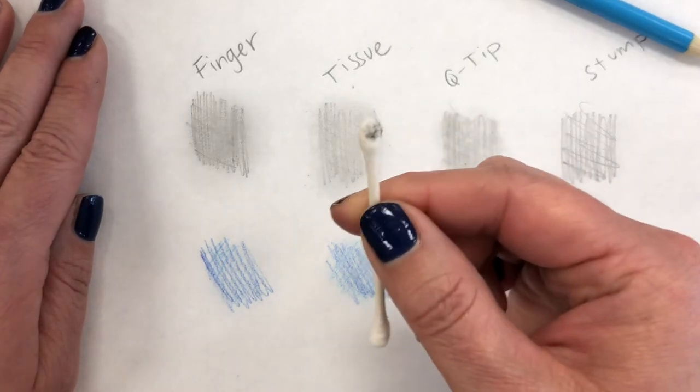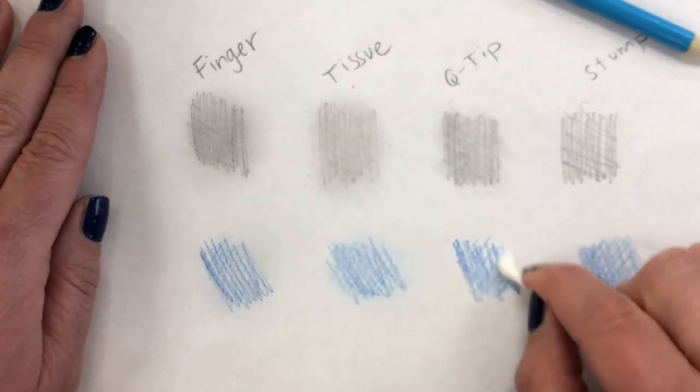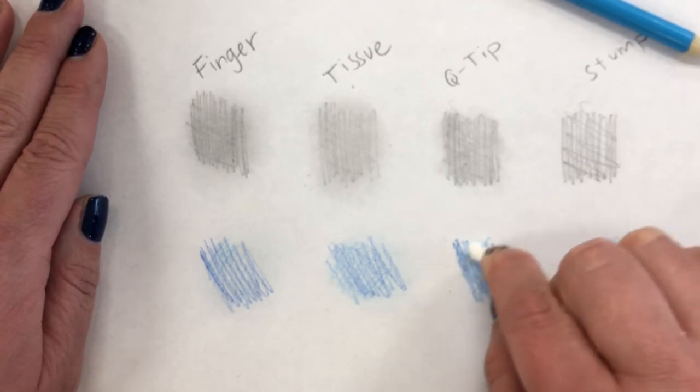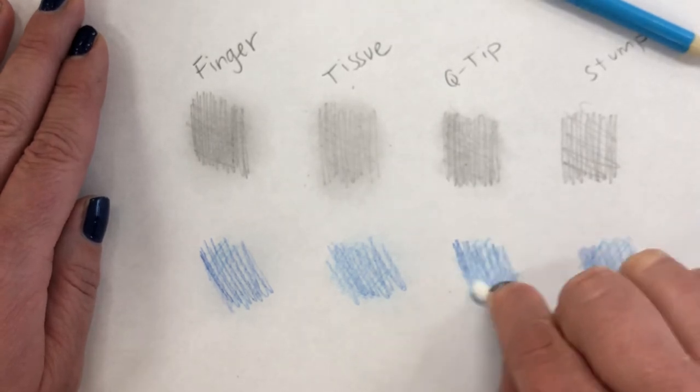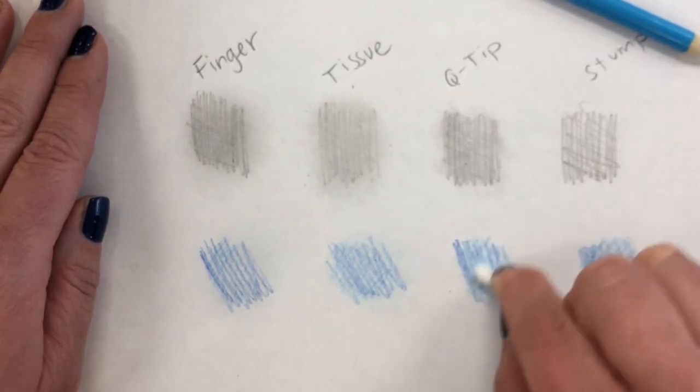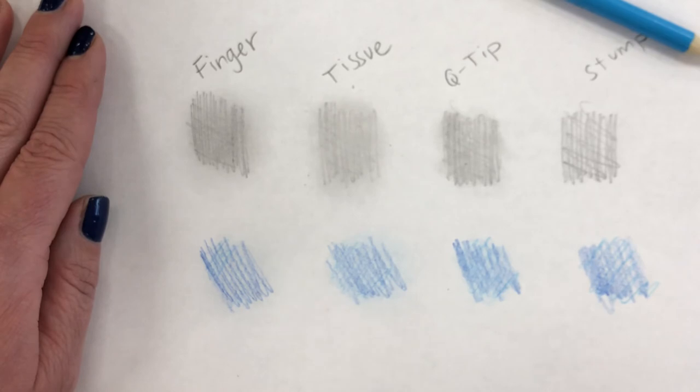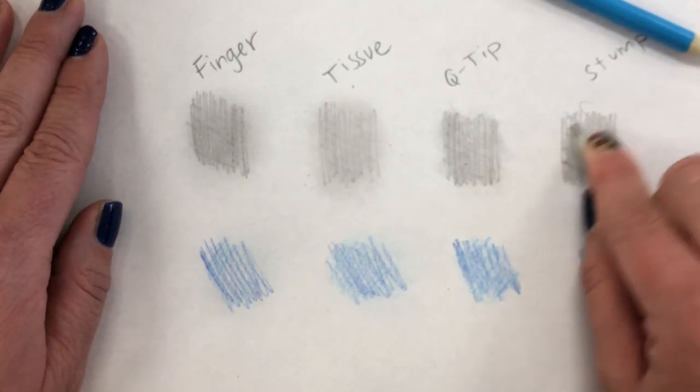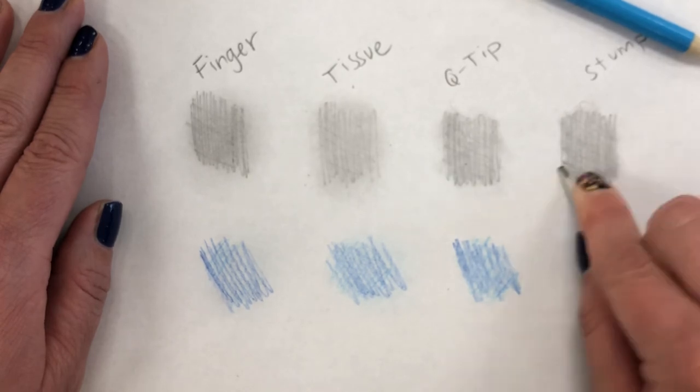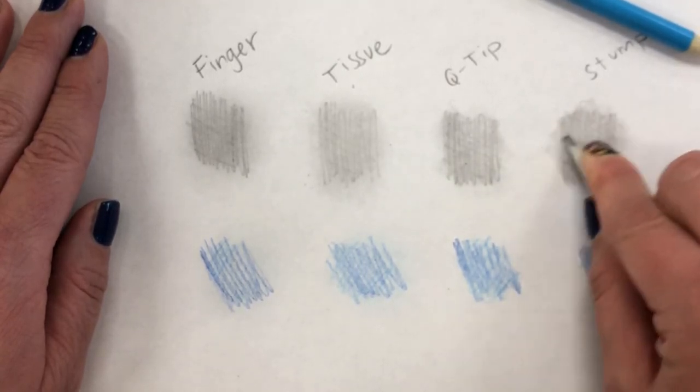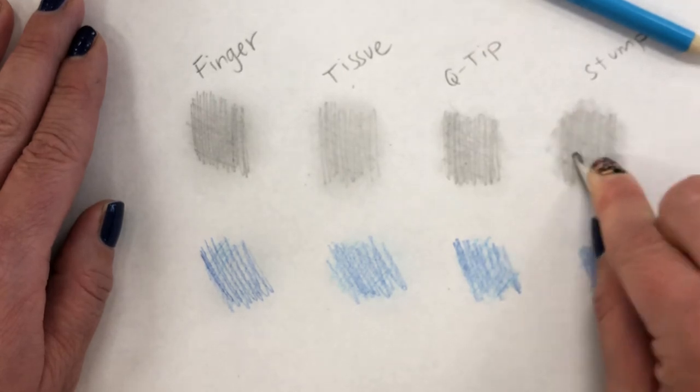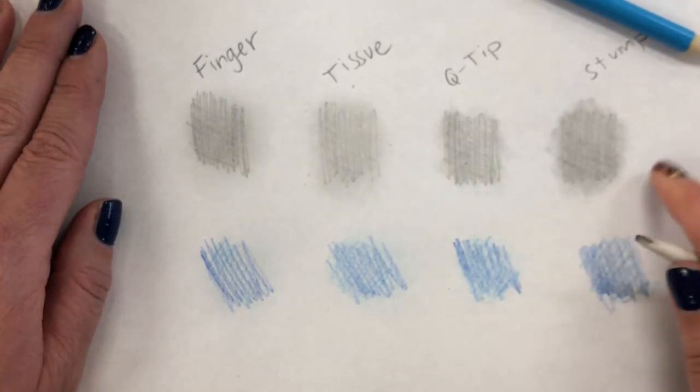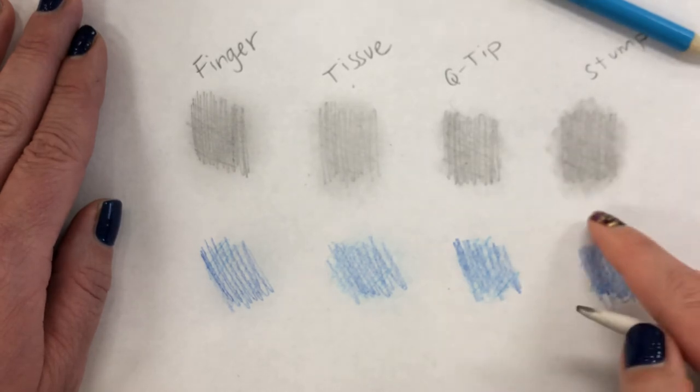And next, I'm going to use the other side for the colored pencil. All right, and last up, the stump. This one's definitely very even. It's like, good for blending without picking up too much of the graphite from the paper.